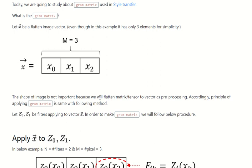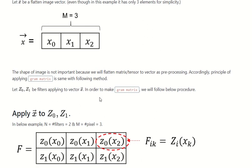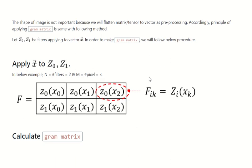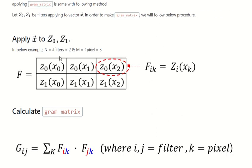Let Z0 and Z1 be filters applying to vector X. In order to make the Gram matrix, we will follow the below procedure: apply vector X to Z0 and Z1, as shown in the example below.